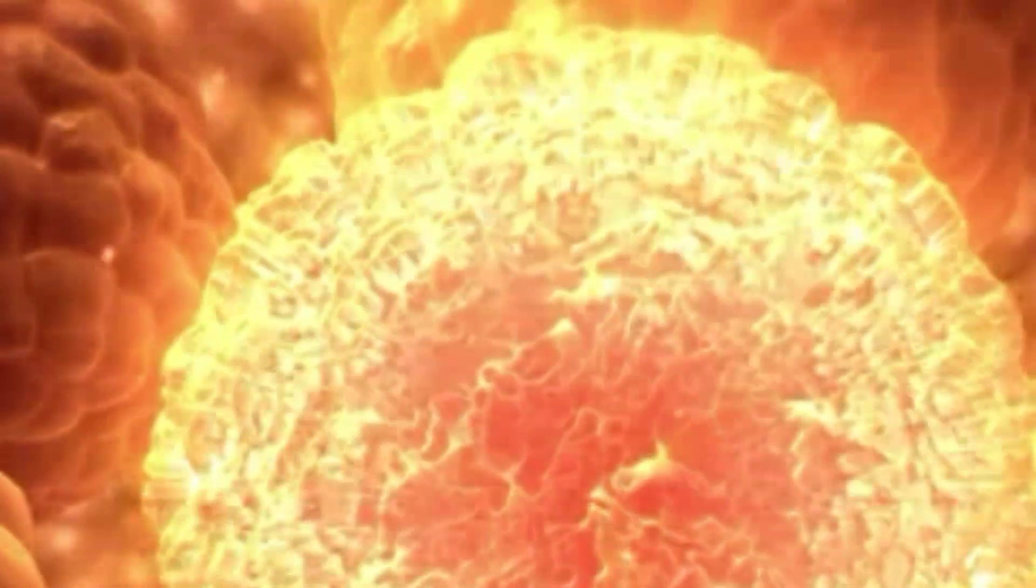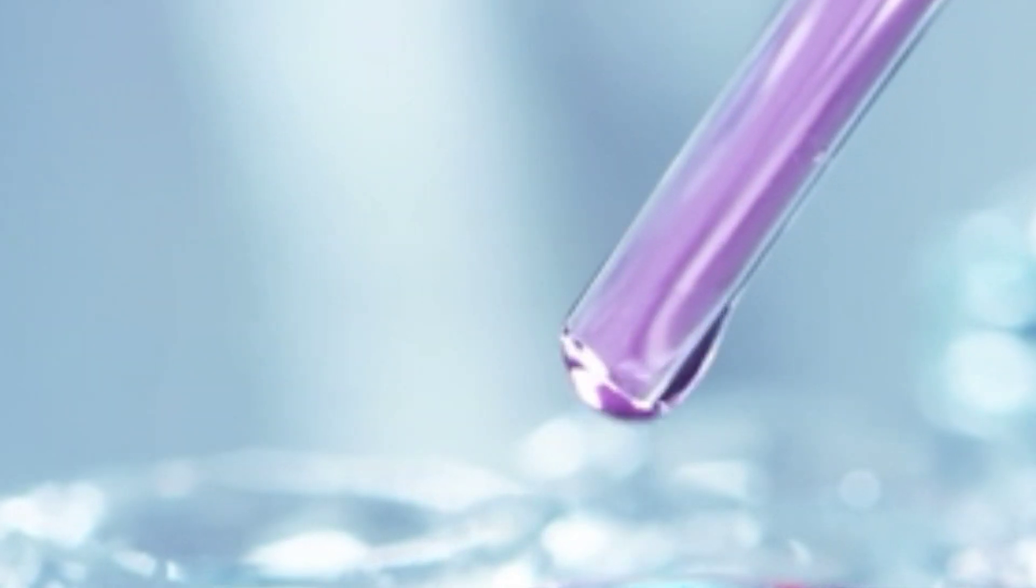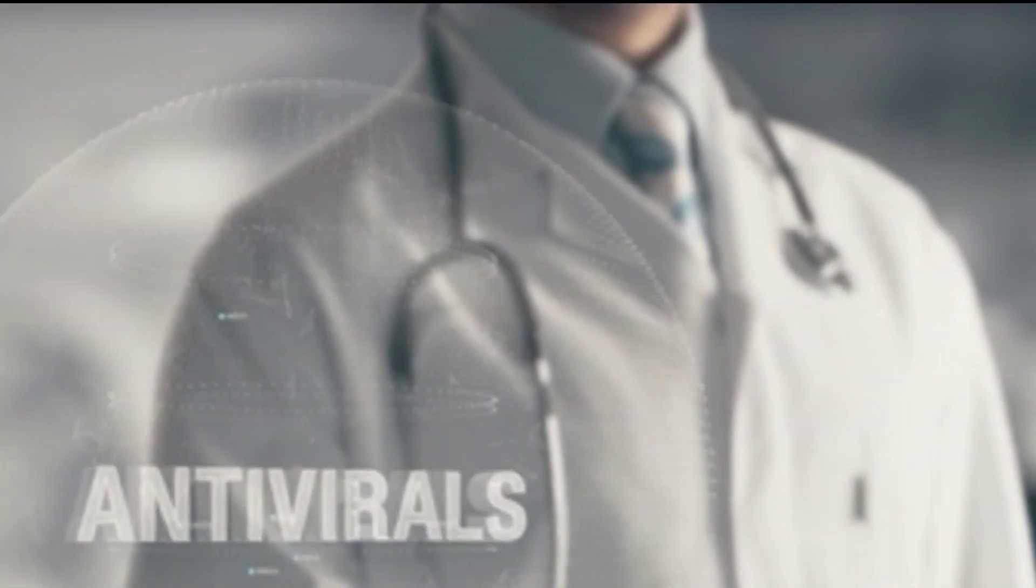A toxin found in honey bees can destroy HIV virus while leaving normal cells unharmed. This is because the toxin damages the protective outer layer of the AIDS virus. The name of this toxin is melittin, and it shows antiviral properties.